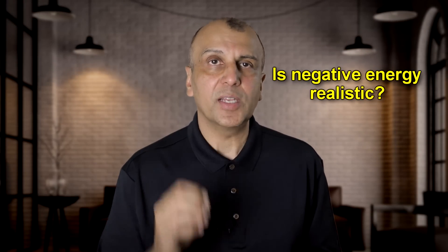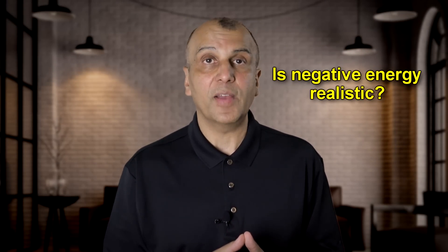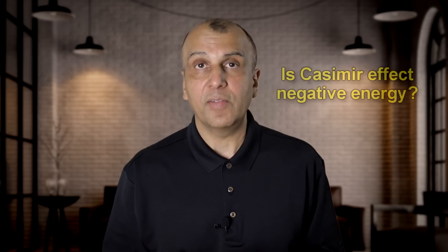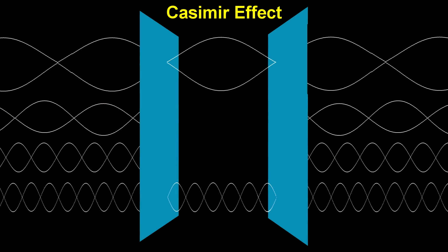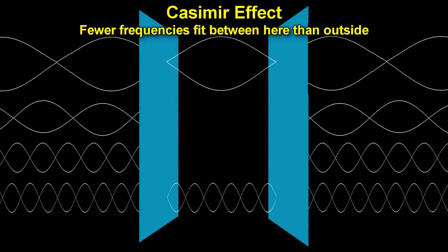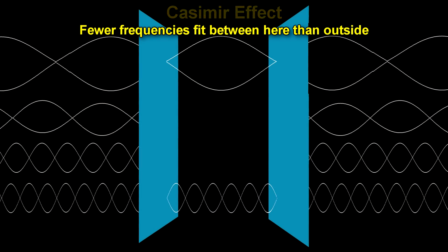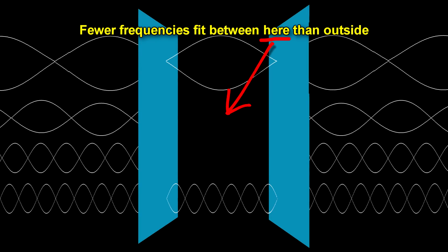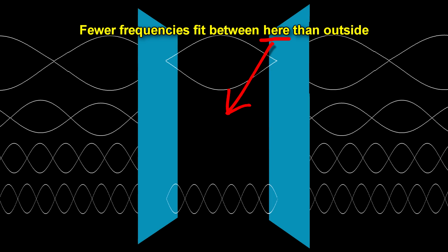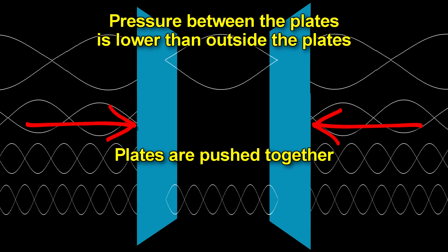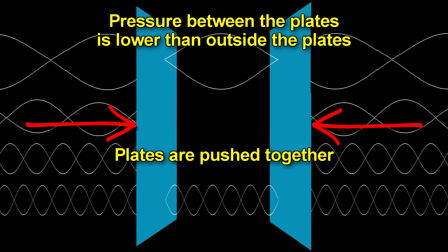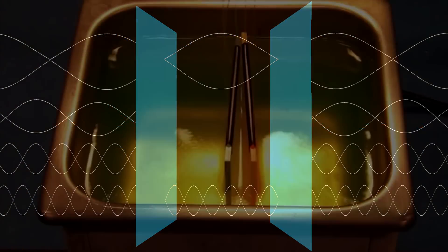Is negative energy even realistic? Some scientists have pointed to the Casimir effect as displaying a kind of negative energy. This is a quantum mechanical phenomenon that occurs when two conducting plates are brought very close together, something on the order of 10 nanometers. When this is done, a certain proportion of the virtual particle frequencies between the plates are excluded, because not all frequencies will fit between the 10 nanometer space, whereas all frequencies will fit outside the plates. The pressure outside the plates thus is greater than the pressure inside the plates. And this can be seen in a physical attraction of the plates that brings them together.